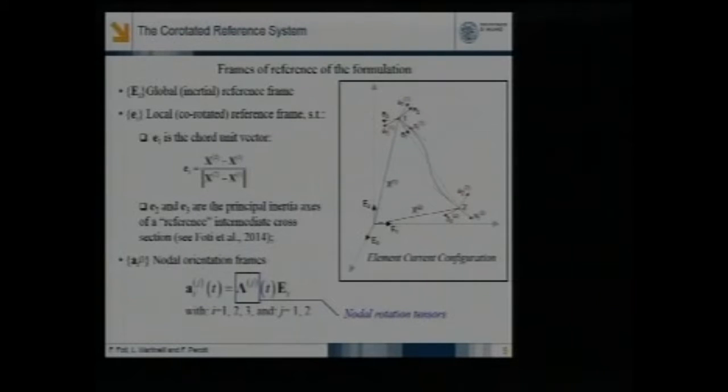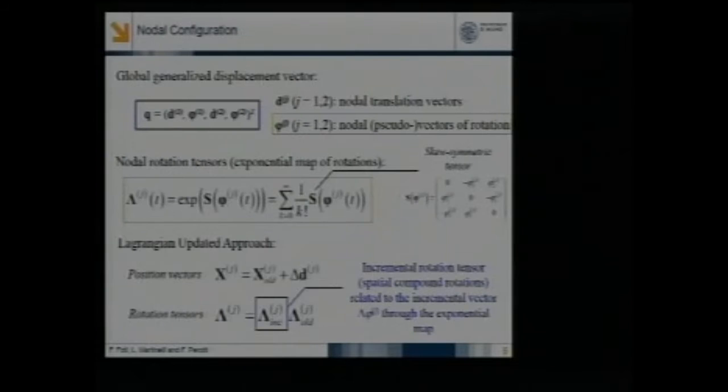Practically, we define the corrotated reference configuration by introducing a reference system attached to each element that rotates and translates with the elements during their motion. The definition is accomplished starting from the knowledge of position and orientation of the nodes. This is described within a Lagrangian updated approach by assuming as global generalized displacements the displacement of nodes and the parameters adopted to represent large rotation, in this case the pseudo-vector of rotation following notations by Argyris, exploited through the exponential map of the rotation group.